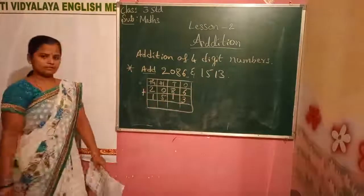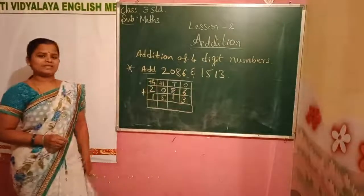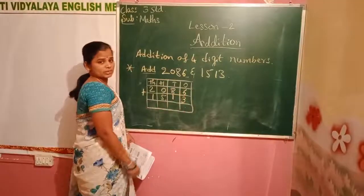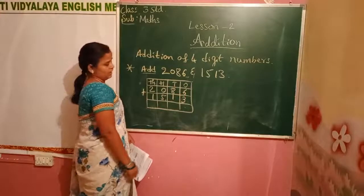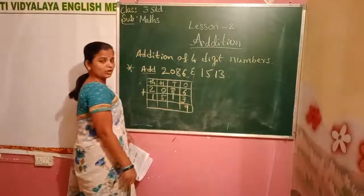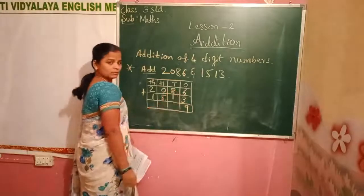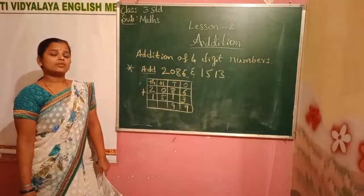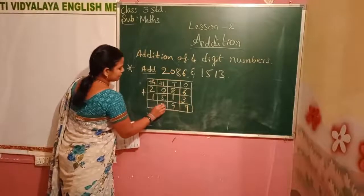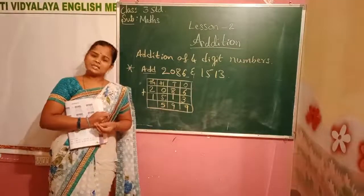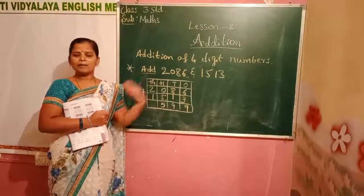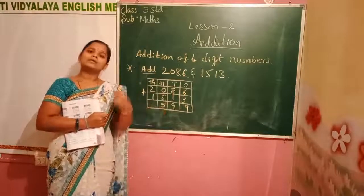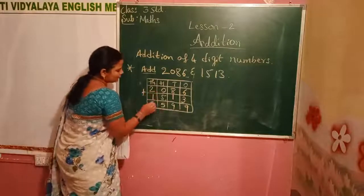Don't start adding from our left side — start from ones place first. Six plus three is nine. Eight plus one is nine. Five plus zero: when we are adding any number with zero, the number itself is the sum. Two plus one is three.